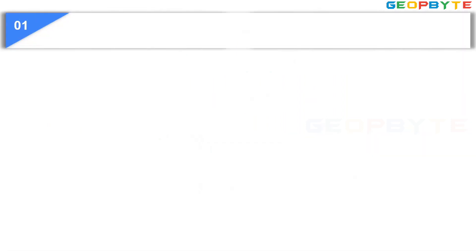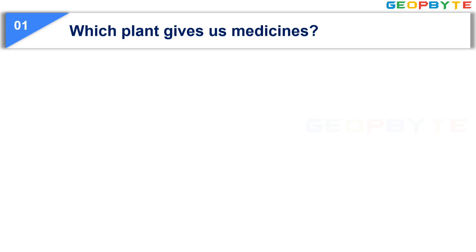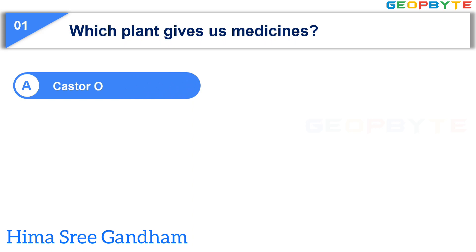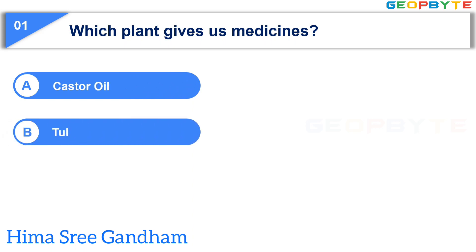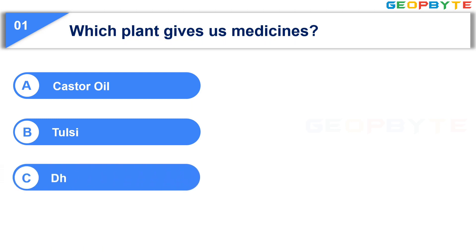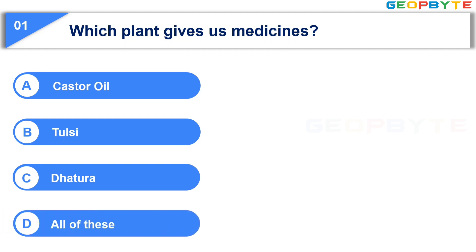The first question is: Which plant gives us medicines? Option A, Castor Oil. Option B, Tulsi. Option C, Dhatura. Option D, all of these. Your time starts now.